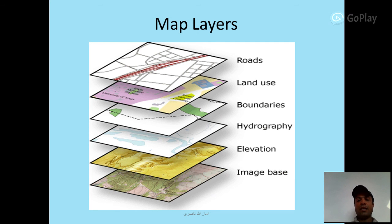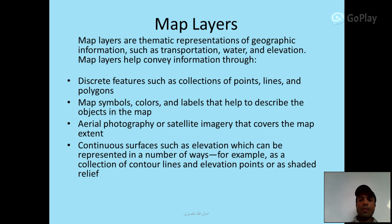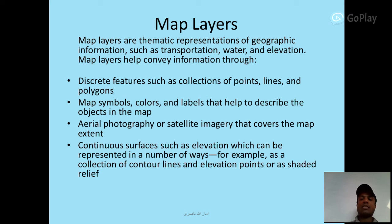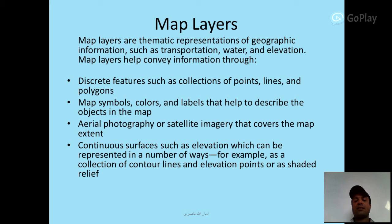Map Layers: layers include image base, elevation, hydrography, boundaries, land use, and roads. Map layers are the metric representation of geographic features such as transportation, water, and elevation. They convey information through specific features such as collections of points, lines, and polygons; map symbols; colors; and labels. They also include aerial photography or satellite imagery, and continuous surfaces such as elevation, which can be represented as contour lines, elevation points, or shaded relief.